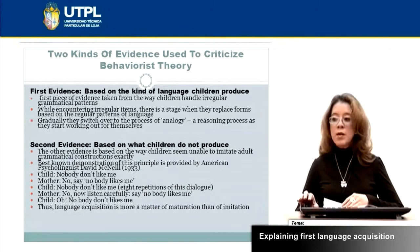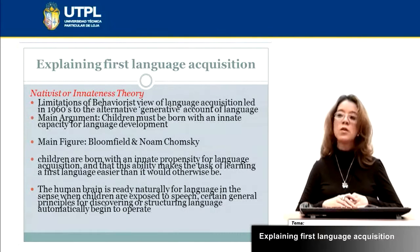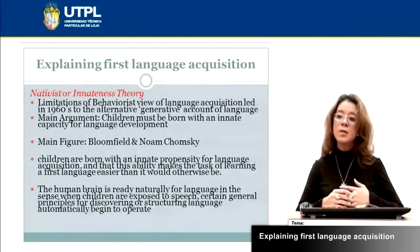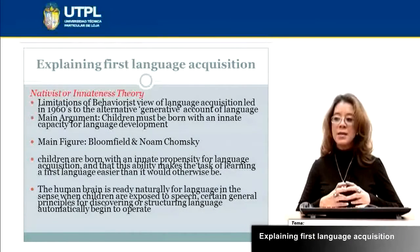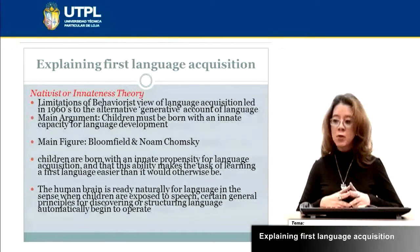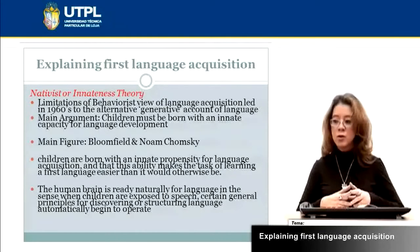Language acquisition is more a matter of maturation than of imitation. The second theory is the innateness theory, proposed by Noam Chomsky. Chomsky says that children are born with an innate property for language acquisition — that our brains are naturally ready for language, so that when children are exposed to speech, certain general principles for discovering and structuring language automatically begin to operate.